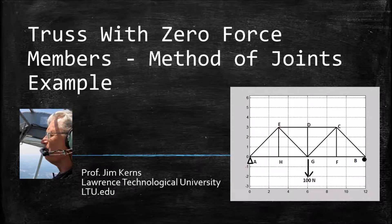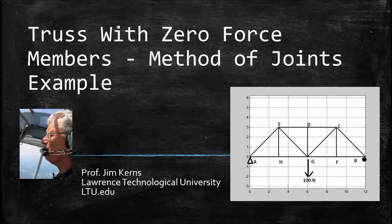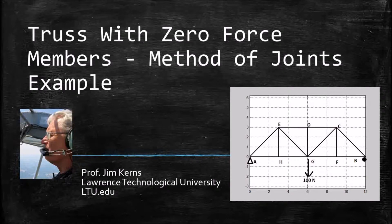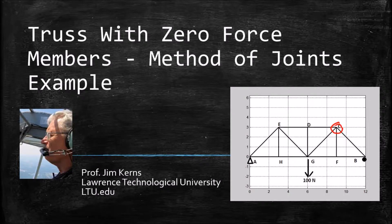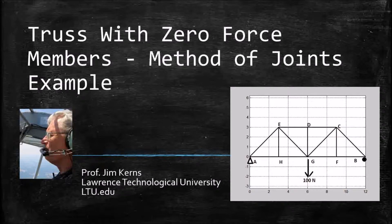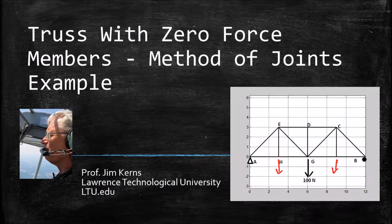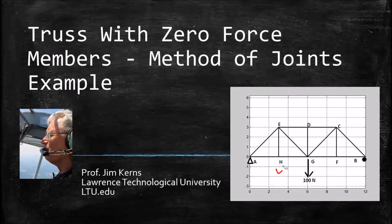Welcome again to statics, another example here at Lawrence Tech. I'm Professor Jim Kearns. Today we're going to talk about a simple truss that includes some zero force members. We'll use the method of joints to find all of the forces in the members around joint C. We'll give you another example where I apply loading at all of these points, and we'll look at how that changes our assumptions about zero force members and our analysis. So we'll get two problems at once.